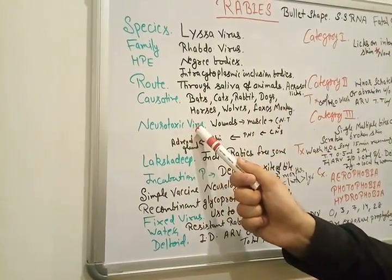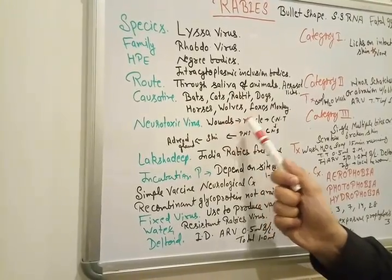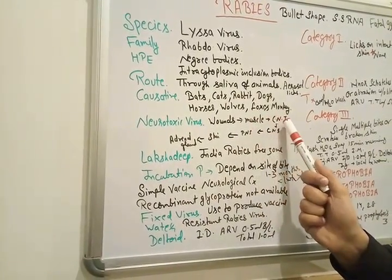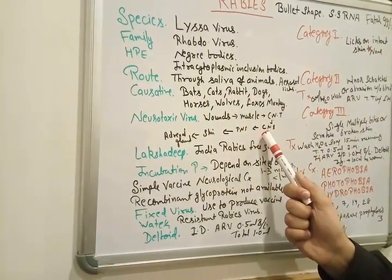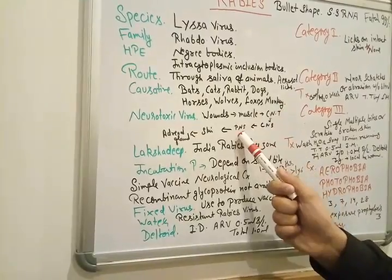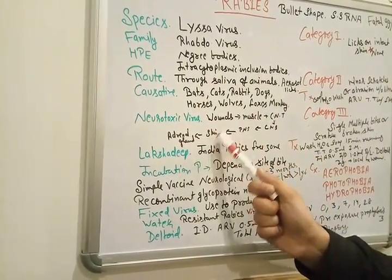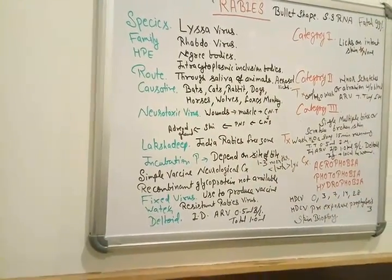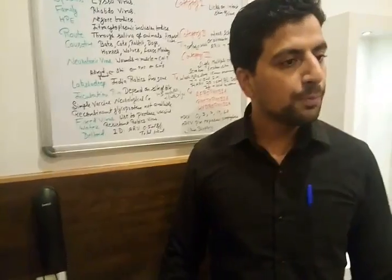This is a neurotoxic virus. After a wound occurs, the virus enters the muscle, then connective tissue, then the central nervous system, then the peripheral nervous system, then the skin, and finally the adrenal gland.